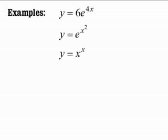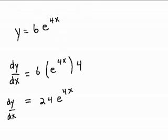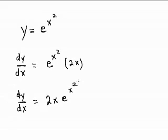y is equal to 6 times e to the 4x. So suppose y is equal to 6 times e to the 4x. dy/dx is 6 times e to the same power, e to the 4x, times the derivative of the power, which is 4. So we get 24 e to the 4x.